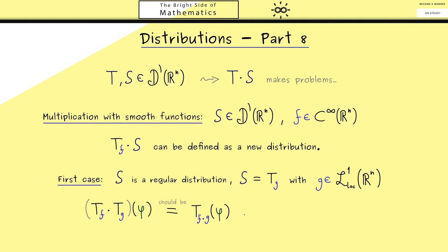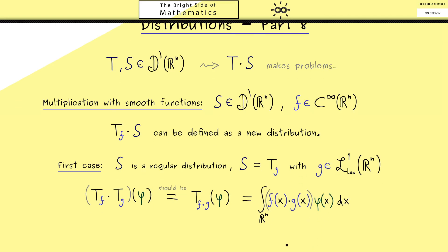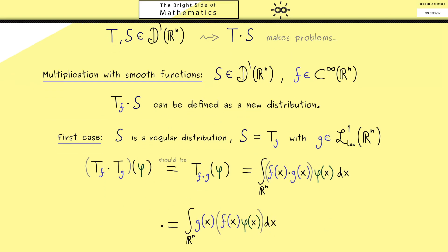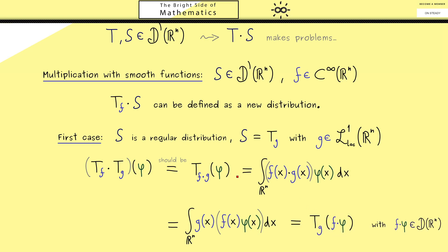The advantage we have now is that we can rewrite this as an integral. By the definition of the distribution, this is simply the integral of f times g times phi. The next simple idea is to push the function f to the function phi, which does not change the integral at all. However, it allows us to interpret this construction as something new: the function f times phi is again a test function, because the product gives us again a C-infinity function and we don't lose the compact support.